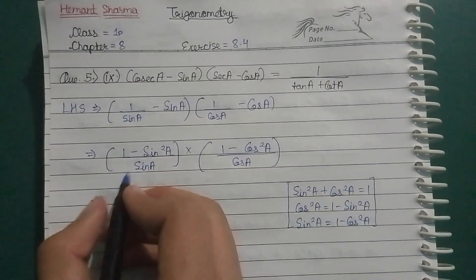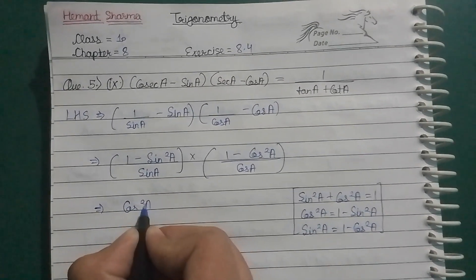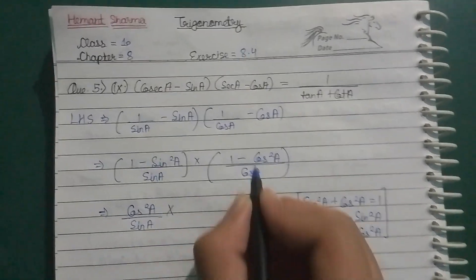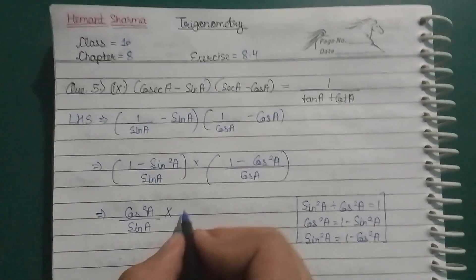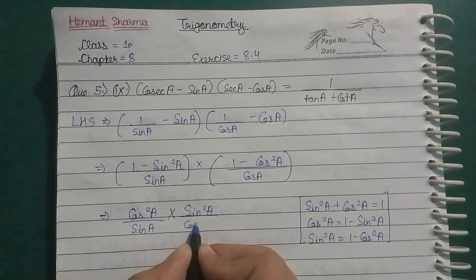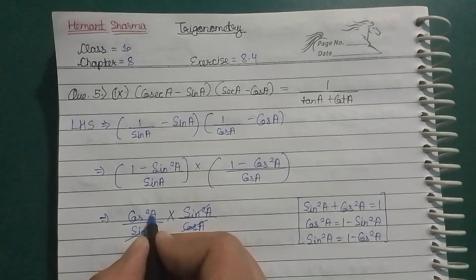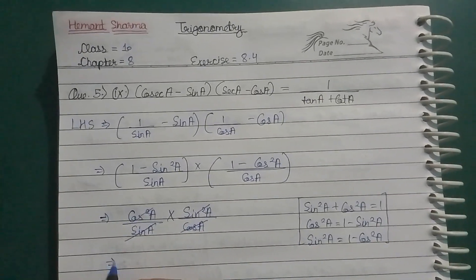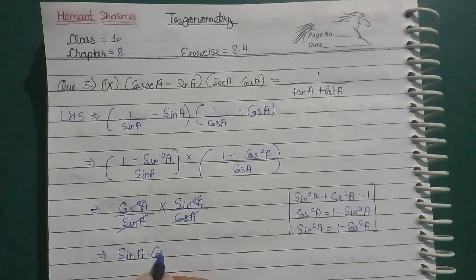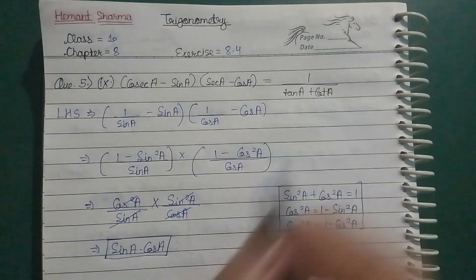So here, 1 minus sin square A is cos square A. So here sin square A, you can write sin square A upon cos A as it is. Sin A will cancel. Now sin A into cos A remains. Sin A into cos A. Now we cannot solve it further, so we have to solve RHS.